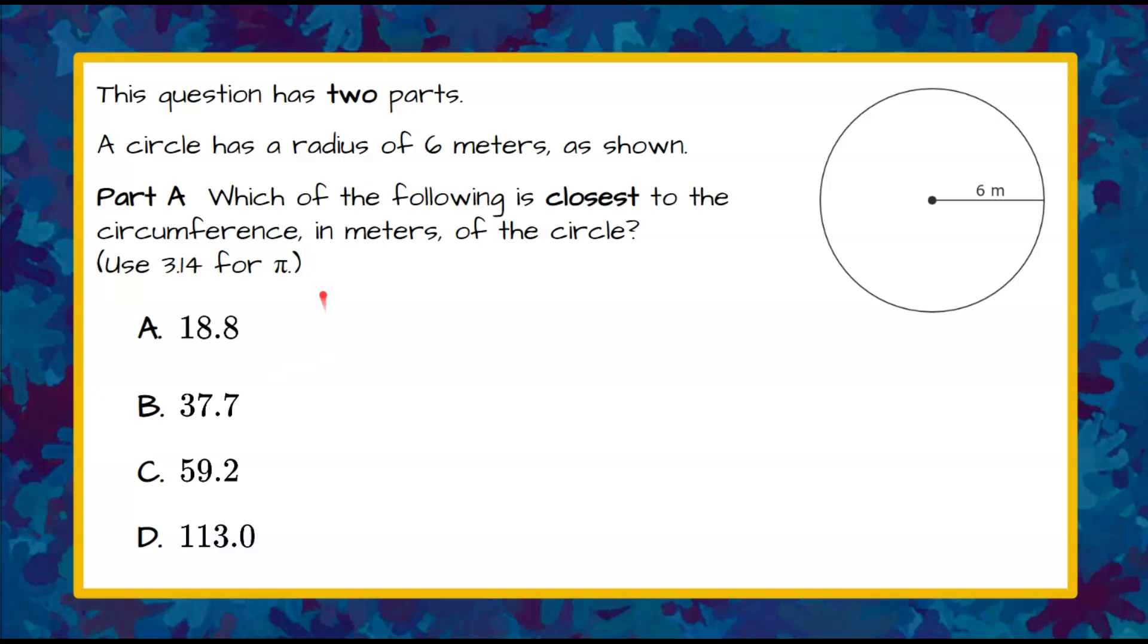Welcome back. So we know that we've been given that this circle has a radius of 6 meters. And here it is labeled in the picture in the diagram. We're asked to find which one of these values is closest to the circumference of the circle. Noticing that it says closest because it's been rounded to the nearest tenth.